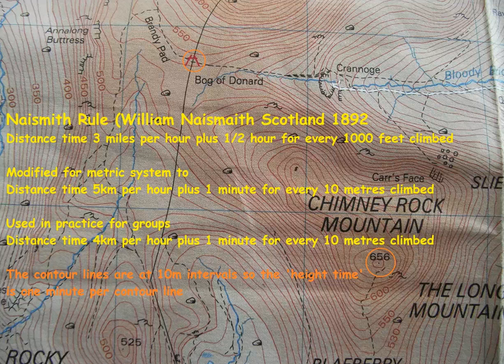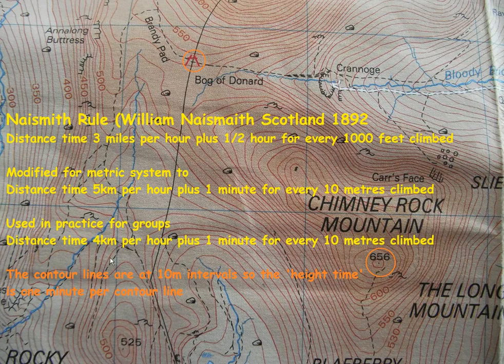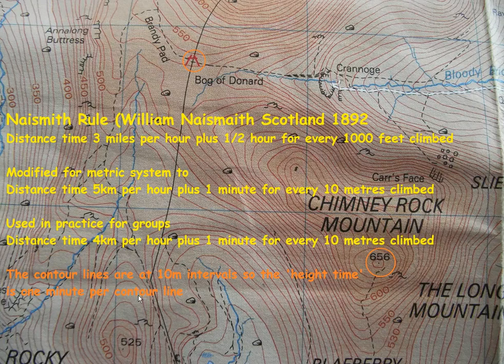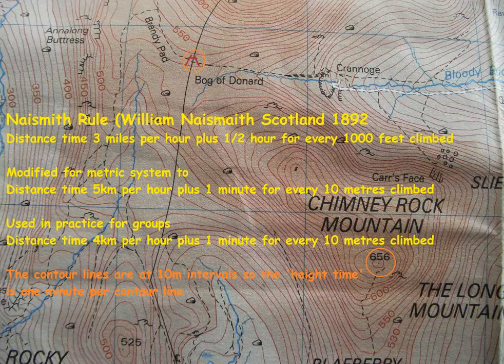The original rule by William Naismith has been modified so that in practice for groups of people we take the distance time of 4km per hour and we add 1 minute for every 10 metres that we climb. So the rule has essentially two parts. It is also useful that our maps have contour lines at intervals of 10 metres, which means that the height time is 1 minute for every contour line on our map.